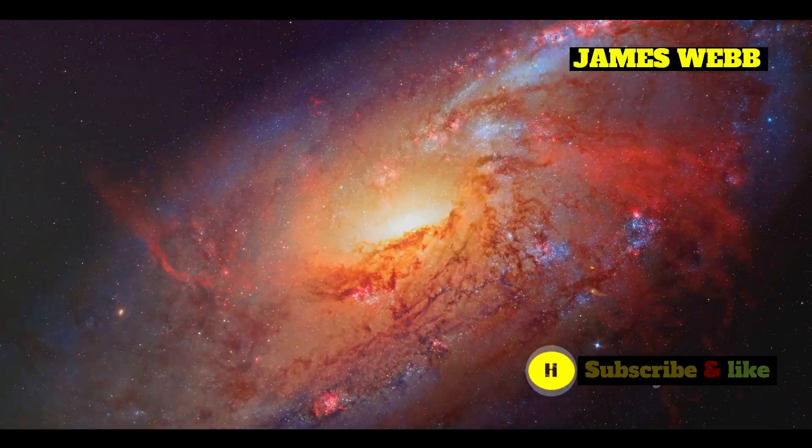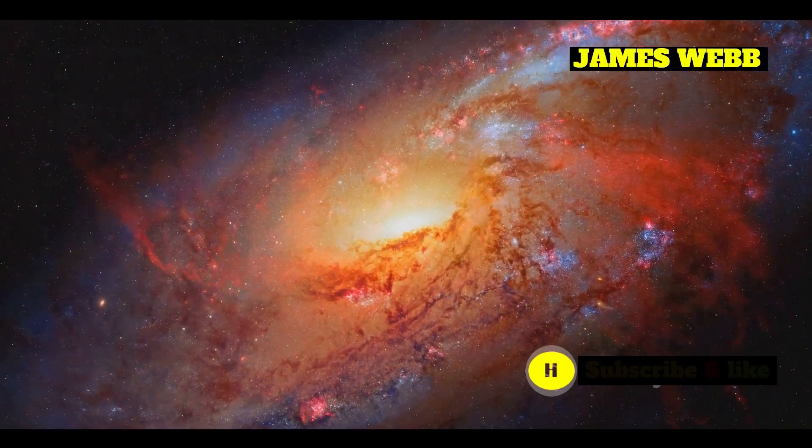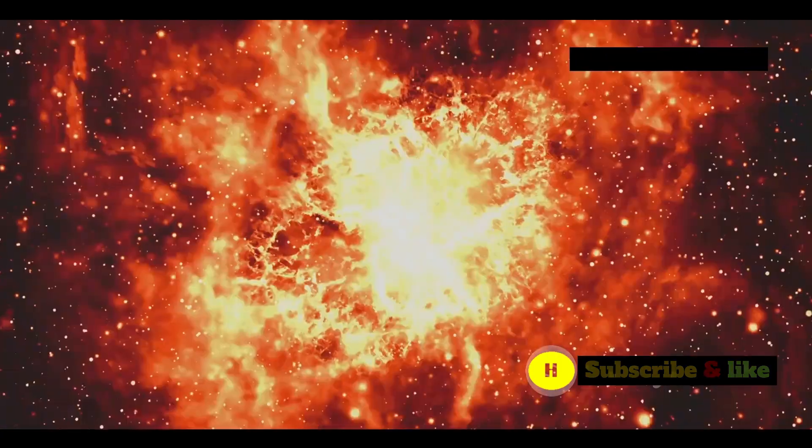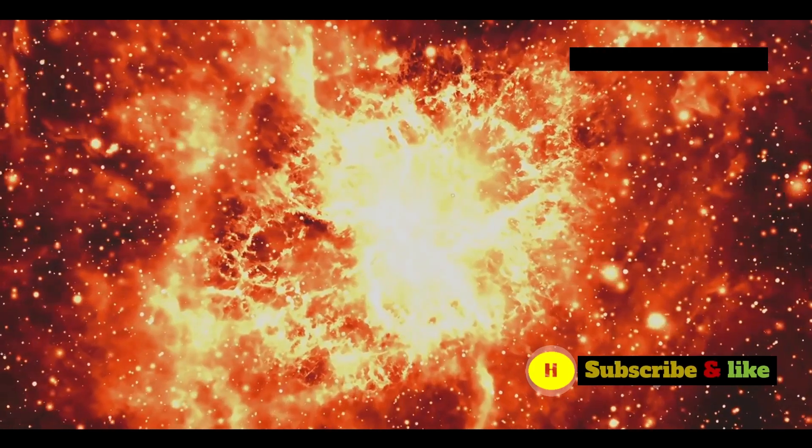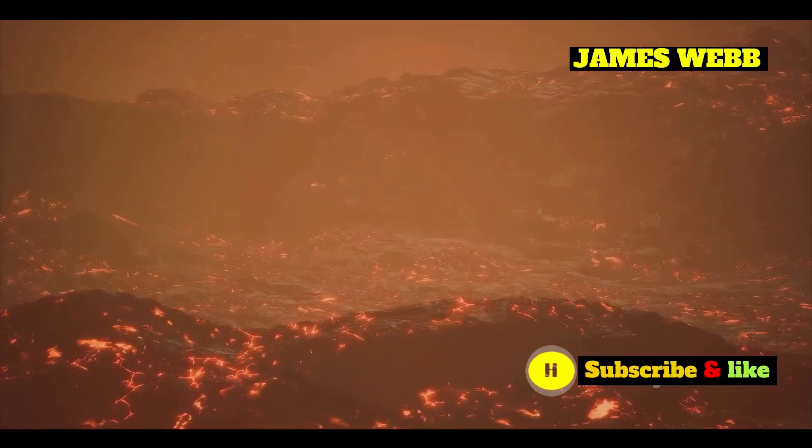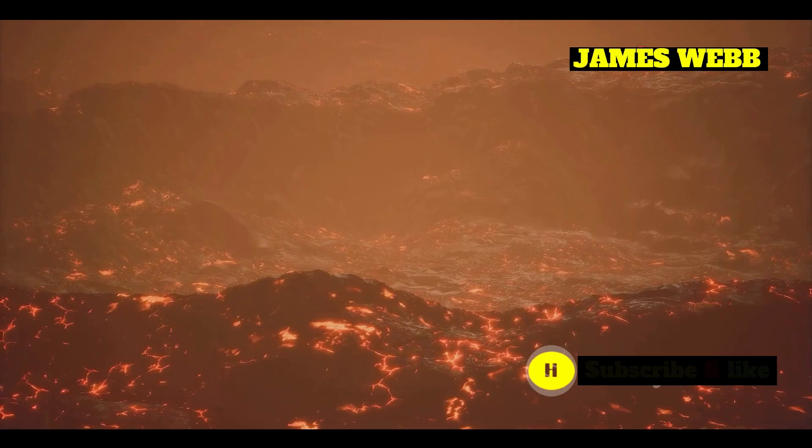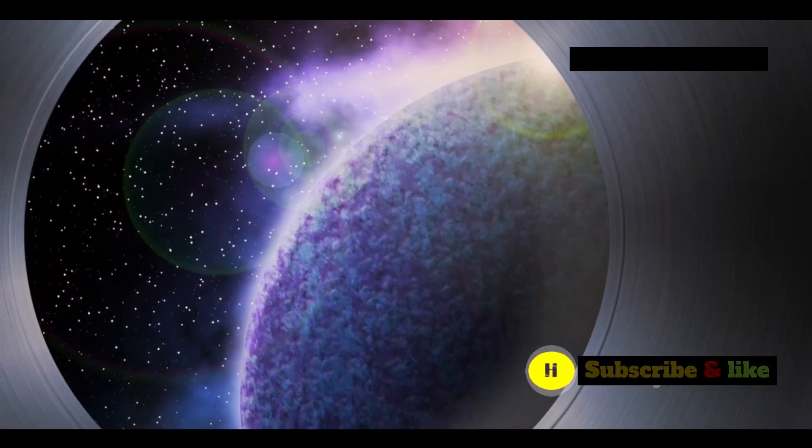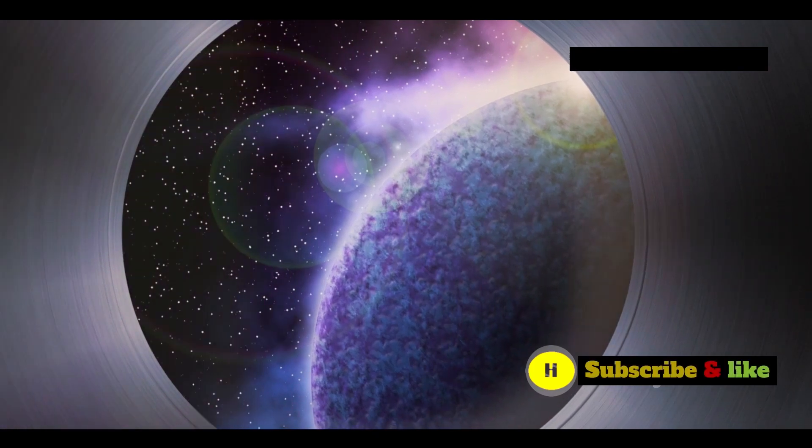55 Cancri E is a scorching hot world. Its close orbit around its star means that it's constantly hit with intense radiation. Surface temperatures on this planet can soar to a blazing 4,400 degrees Fahrenheit, or 2,400 degrees Celsius. That's hot enough to melt rock. Imagine a world where the ground is a molten sea of lava, and the air itself is burning hot. This is the reality of 55 Cancri E, a planet trapped in a fiery hug with its star.